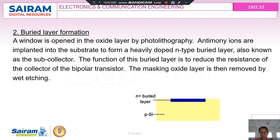The next step is buried layer formation. A window is opened on the silicon dioxide layer by the process of photolithography. Antimony ions — pentavalent impurities used for an N-type layer — are implanted into the substrate to form a heavily doped N+ buried layer, also known as a subcollector. The function of this buried layer is to reduce the resistance of the collector of the bipolar transistor. The masking layer is then removed by wet etching.